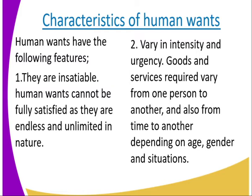Number two: they vary in intensity and urgency. Goods and services required vary from one person to another. That is why we say human wants vary in intensity — there are those that are urgent, those that are intense, and those that are not urgent. For example, getting a car might be urgent for one person, while food is urgent for another. They keep on varying depending on age, gender, and situations.